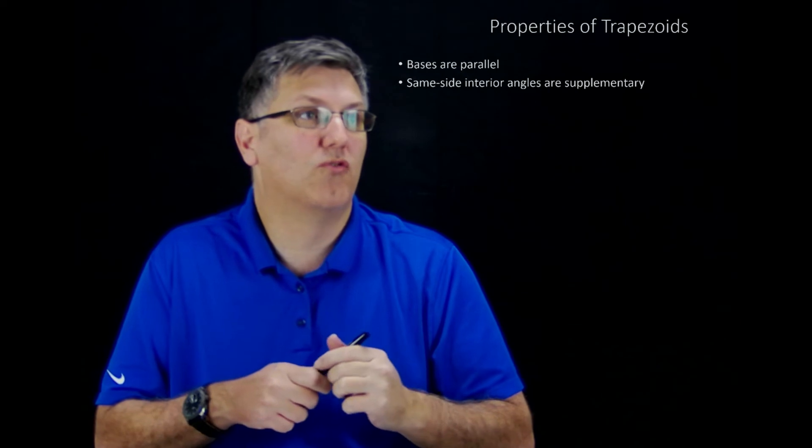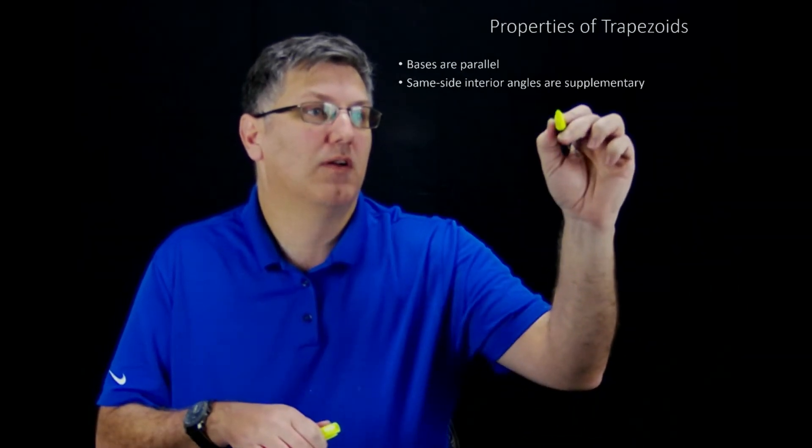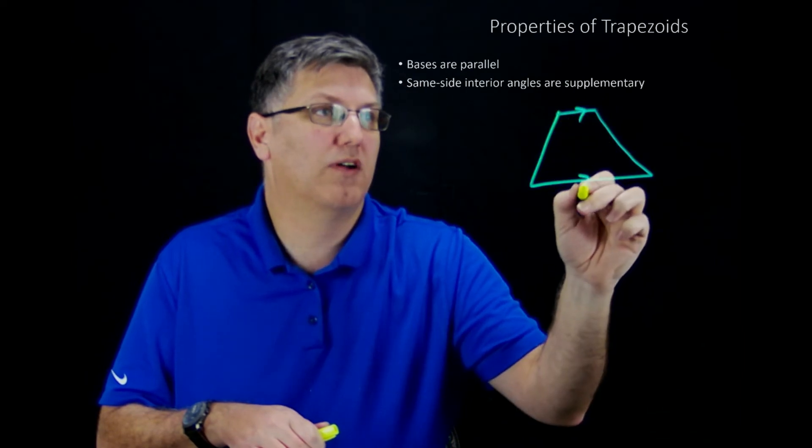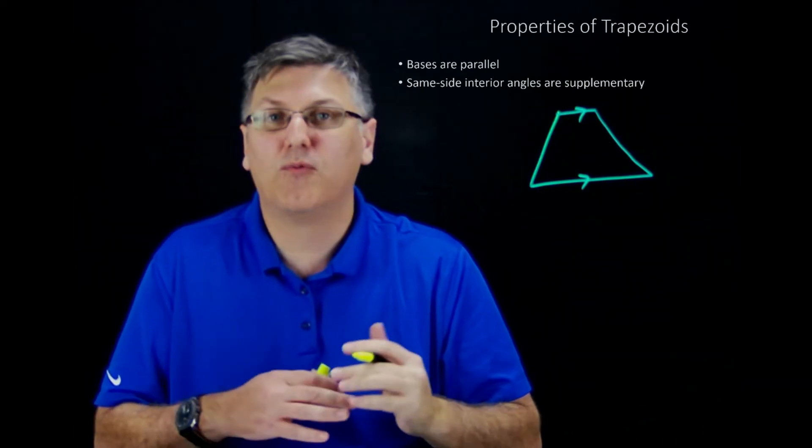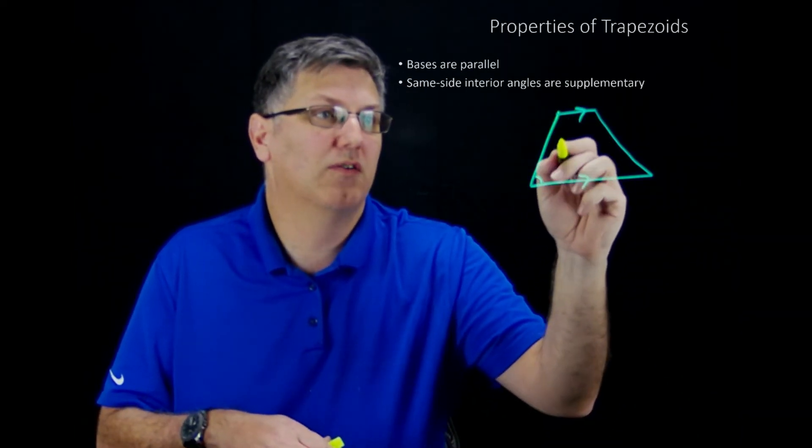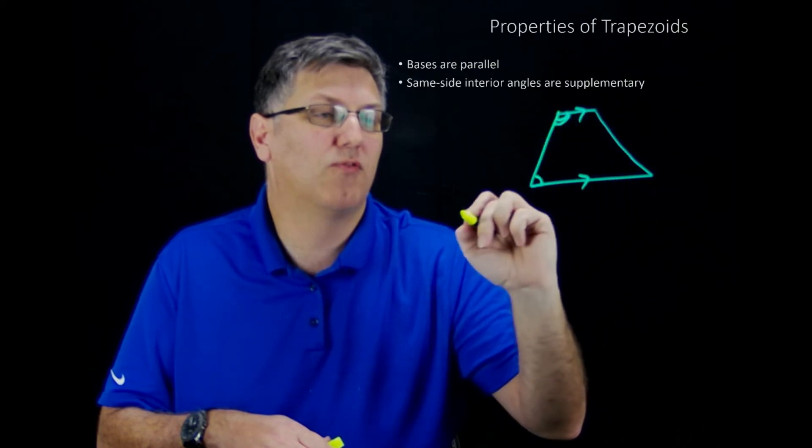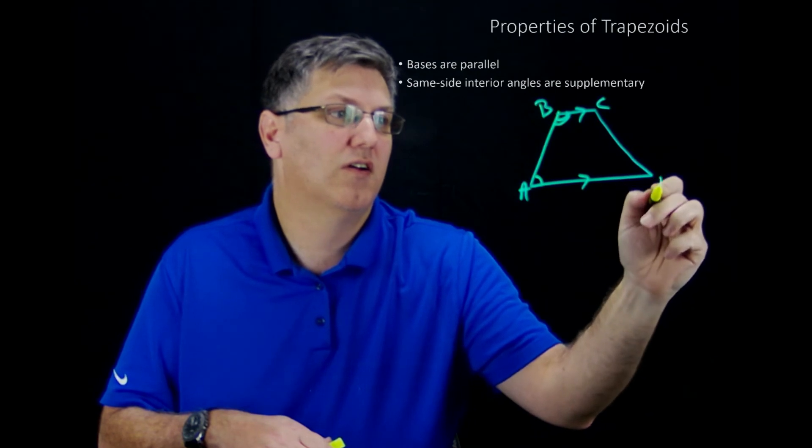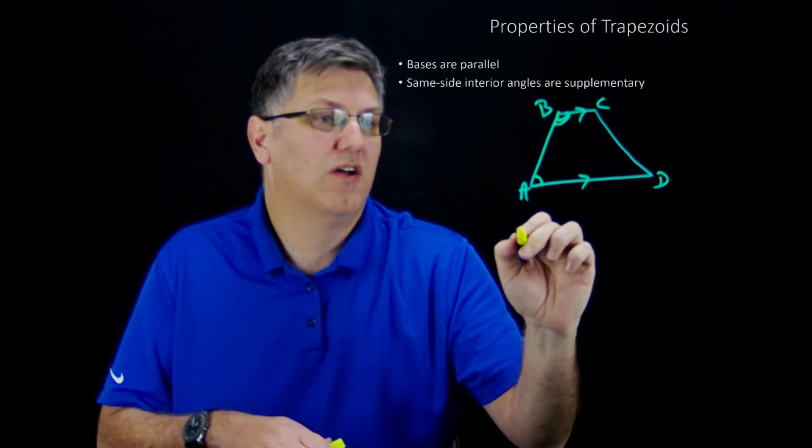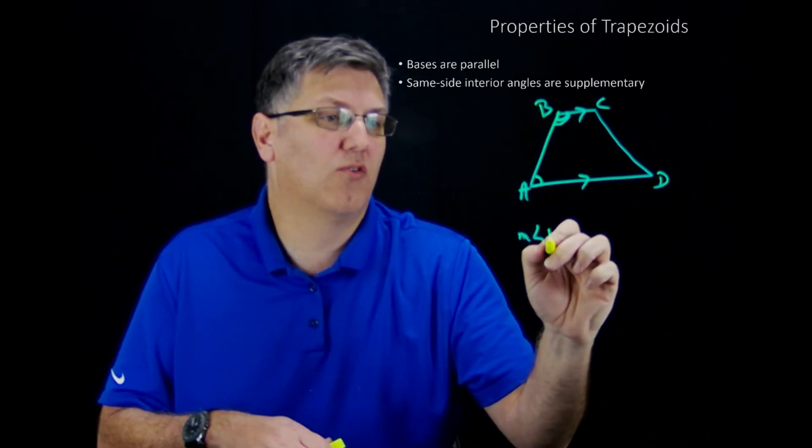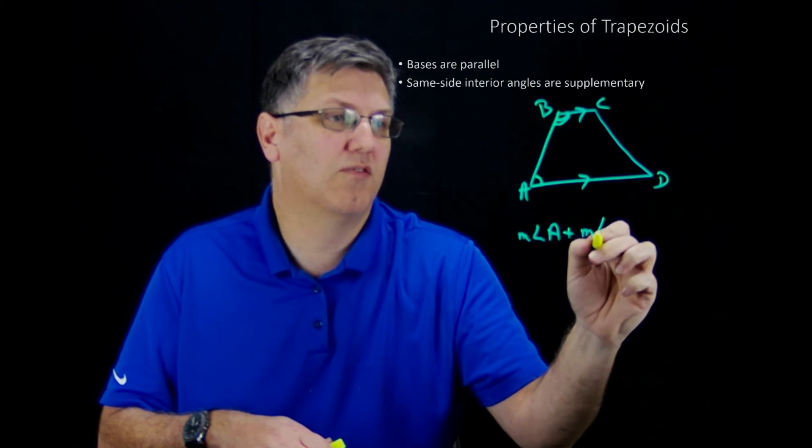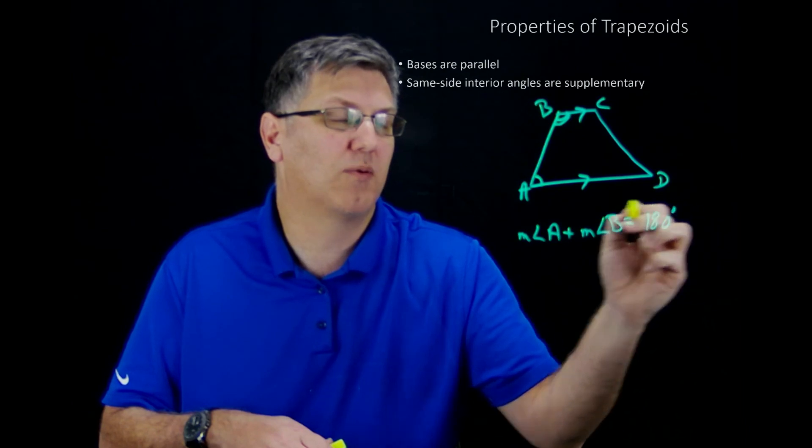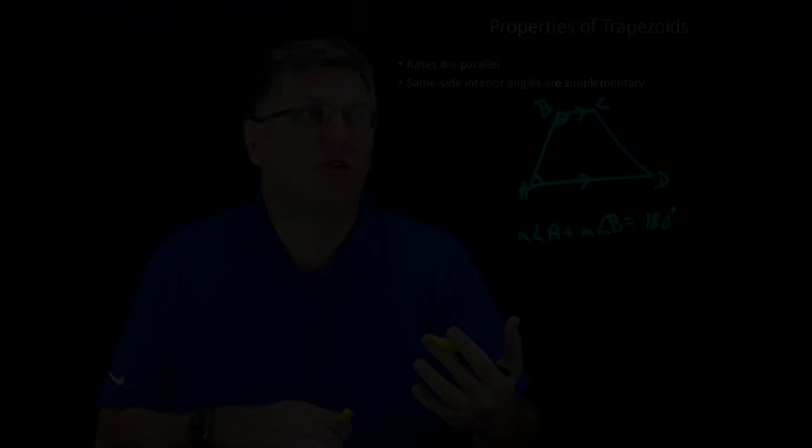So if I were to draw a trapezoid again, and we call this parallel and this parallel, if we actually look at this angle here and this angle here, if we add those, let's call this trapezoid A, B, C, D. And if I did the measure of angle A plus the measure of angle B, that's actually going to equal 180 degrees because they're supplementary.